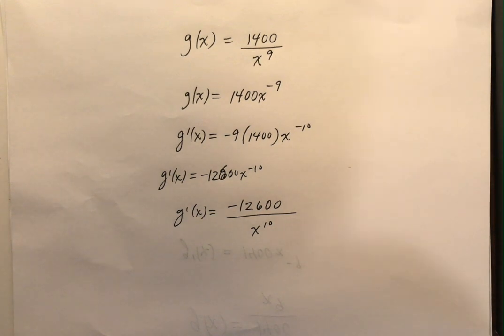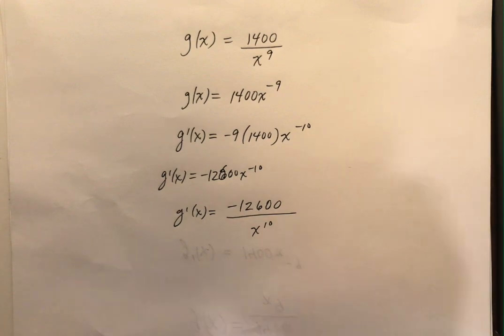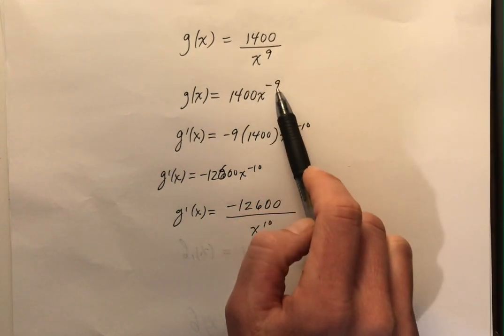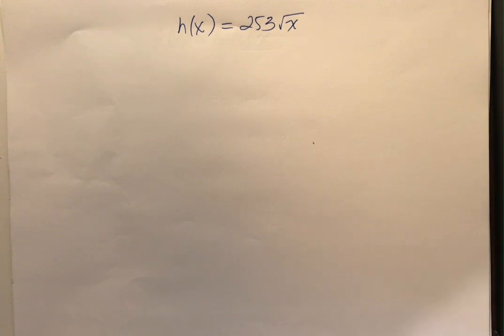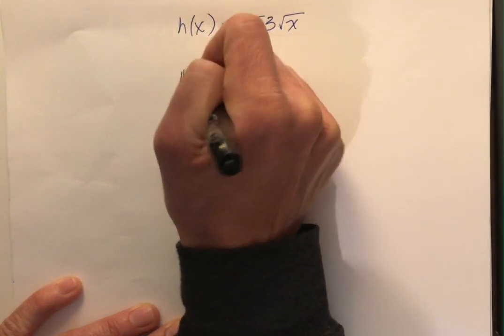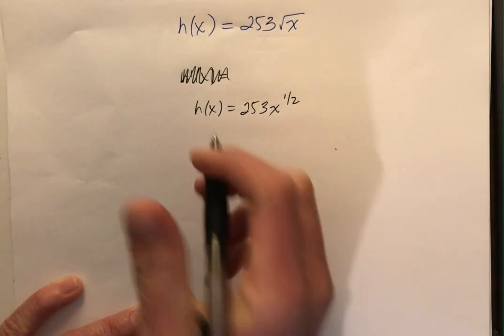So not bad, right? You can do this. This is just some basic algebra. One thing I want to stress, when we had this coefficient here, when we have a scalar something times a function, the 1400 kind of just stuck along throughout the whole process. We rewrote our x term to the negative power and that 1400 just got multiplied by that negative nine.